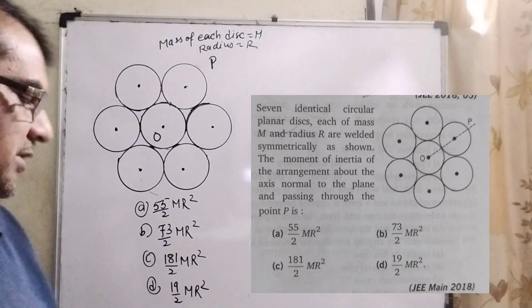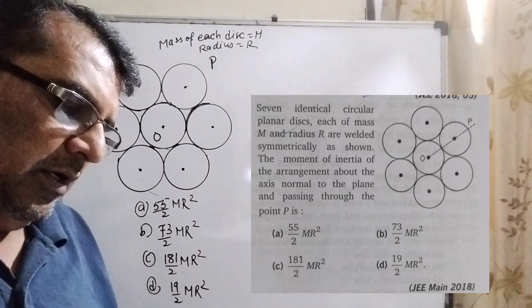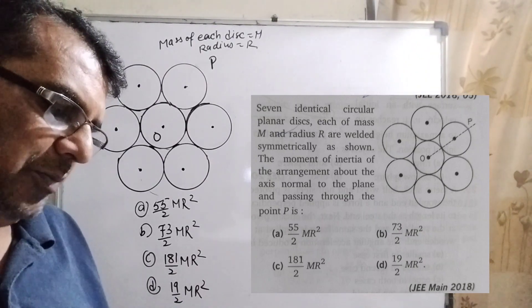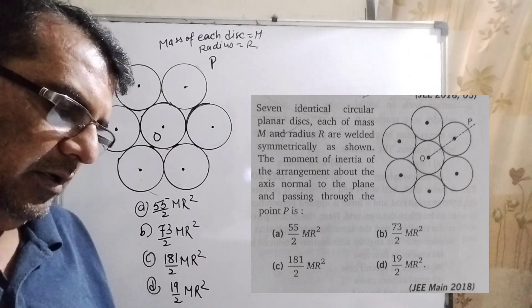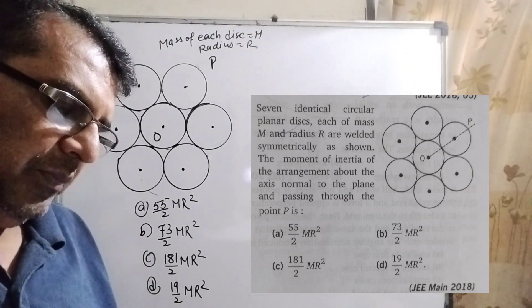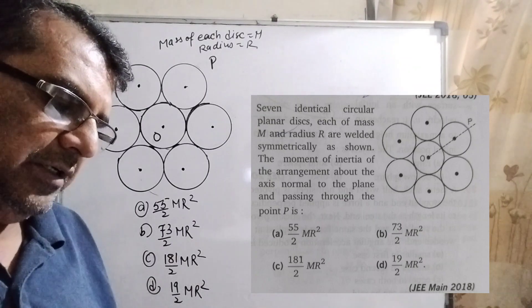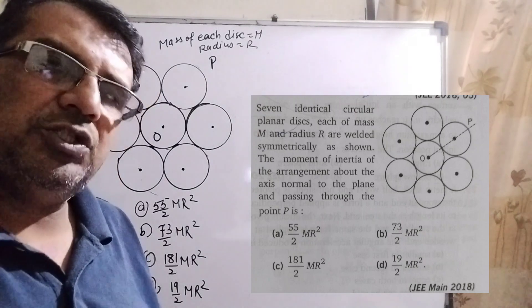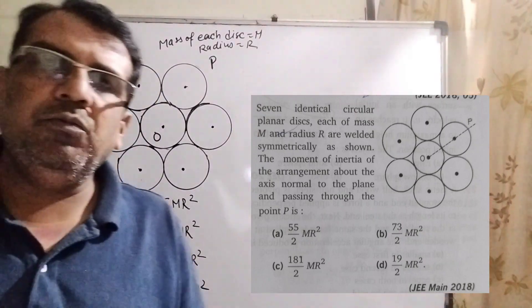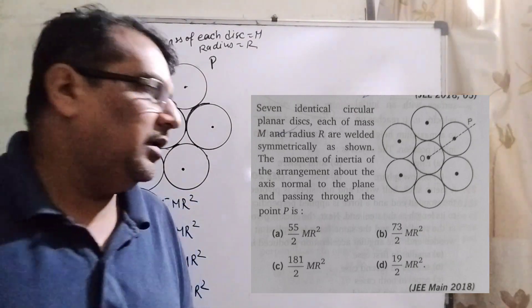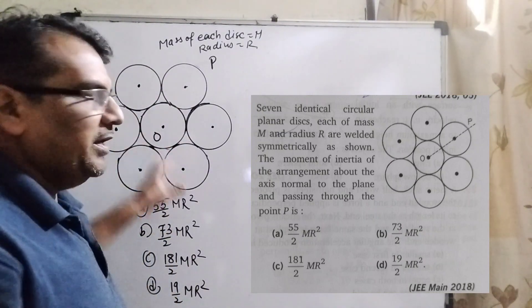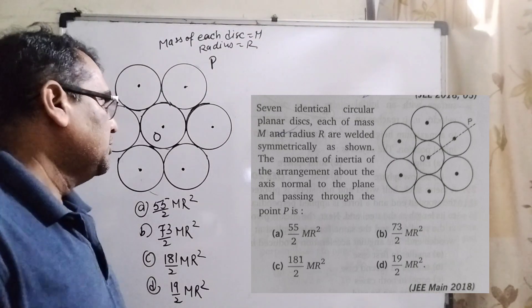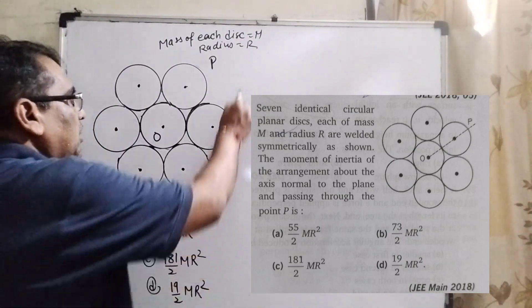have four options given: Option A: 55/2 MR². Option B: 73/2 MR². Option C: 181/2 MR². And Option D: 19/2 MR². This question was asked in JEE Mains 2018. One more important thing: questions based on this pattern are asked many times in competitive exams, so please look at it carefully.